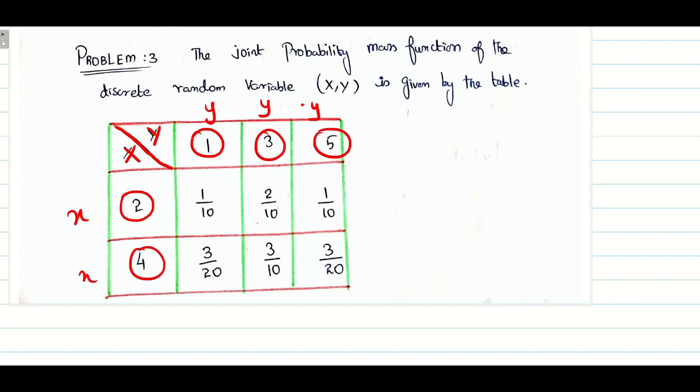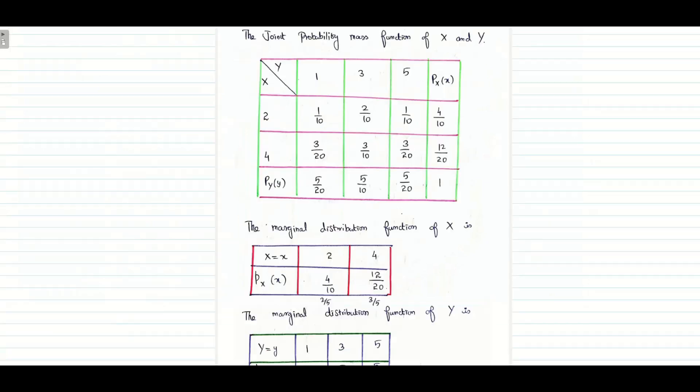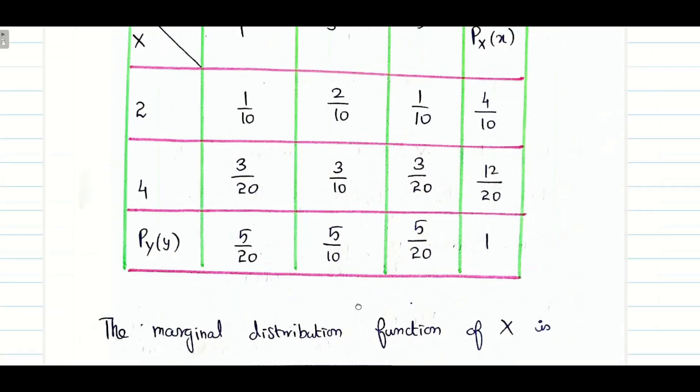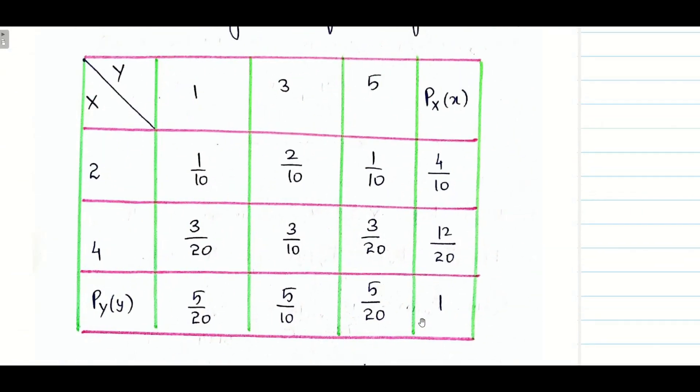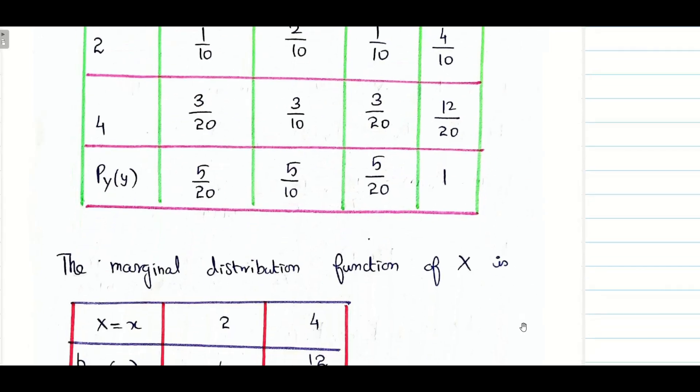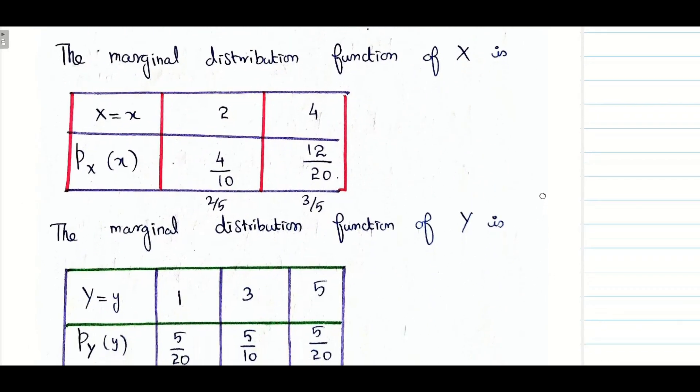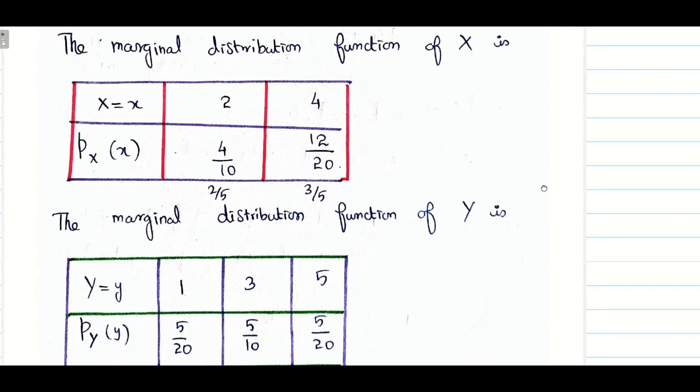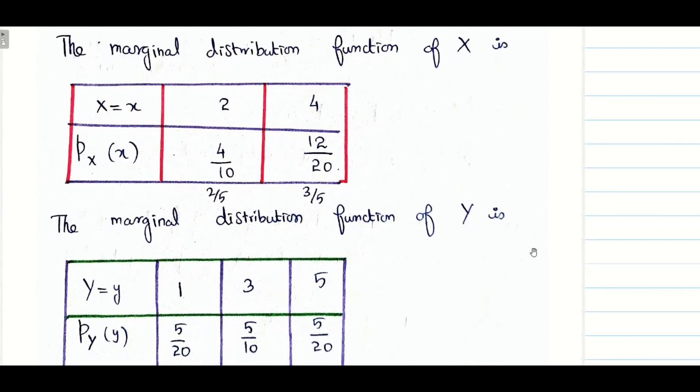When you do the row sum, we take it as marginal function for X. When you go for column sum, it is going to be for Y. From this I can write the marginal distribution function for X and Y very easily.